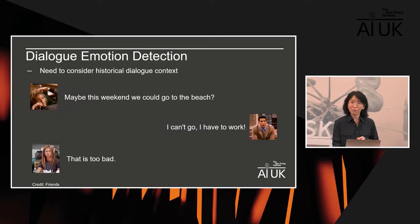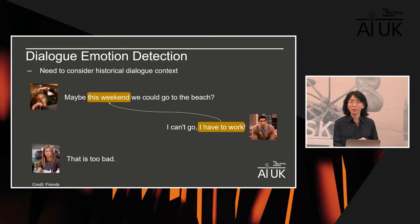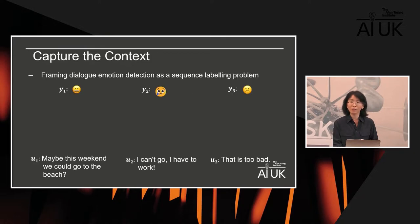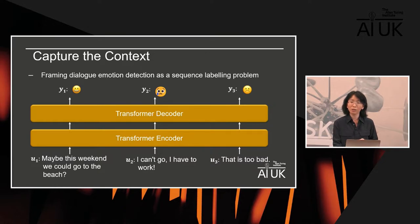To build a dialogue emotion detection system, we need to consider historical dialogue context — for example, the second utterance omits the phrase 'this weekend,' and the last utterance has a co-reference relation with 'have to work.' We can frame this as a sequence labeling problem: given a sequence of utterances, infer the emotion label sequence. We can use a transformer encoder-decoder architecture, which naturally captures historical contextual information.